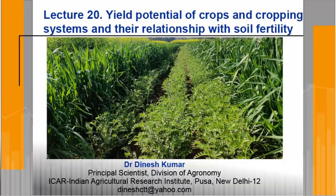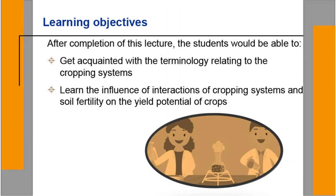Dear students, you are welcome in this class. The topic of this lecture is yield potential of crops and cropping systems and their relationship with soil fertility. The learning objectives are to get acquainted with terminology relating to crops and cropping systems, and to learn the influence of interaction of cropping systems and soil fertility on the yield potential of crops.